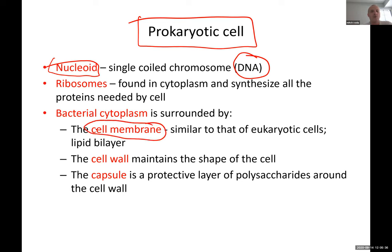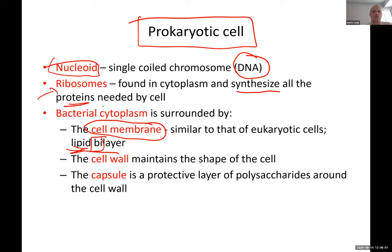The cell membrane is a lipid bilayer — bi means two — so it is made up of two fatty layers. Inside these cells there are ribosomes, which have one important function in both eukaryotic and prokaryotic cells: they synthesize proteins.